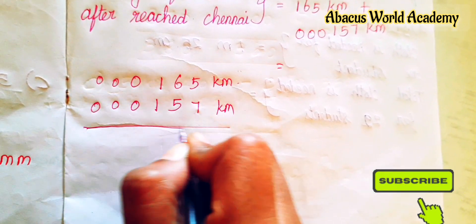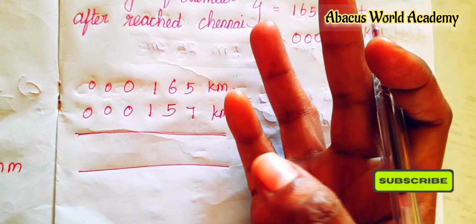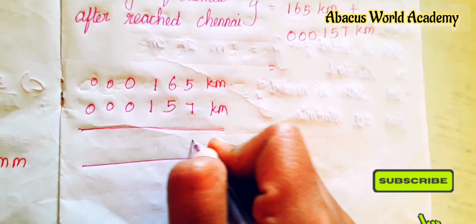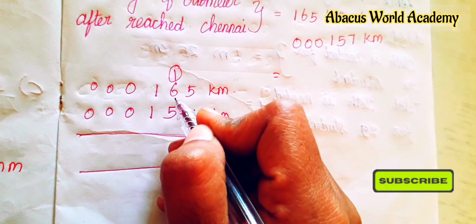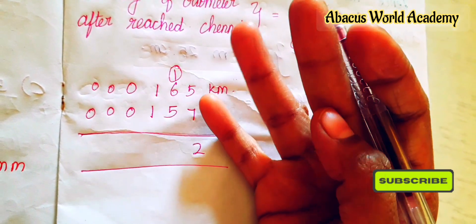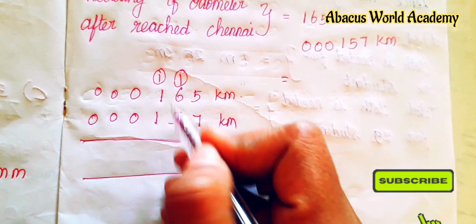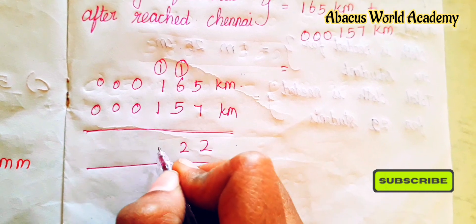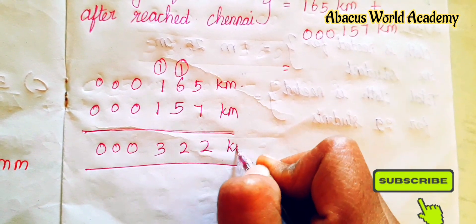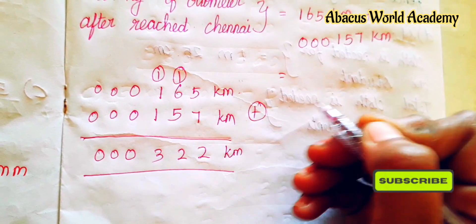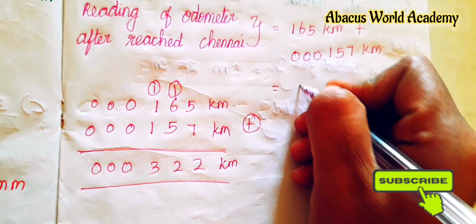Now add and answer. 5 plus 7 is 12, so write 2 carry 1. Next, 1 plus 6 is 7, 7 plus 5 is 12, so write 2 carry 1. Next, 1 plus 1 is 2, 2 plus 1 is 3. So 0, 0, 0. Answer: 000322 km.